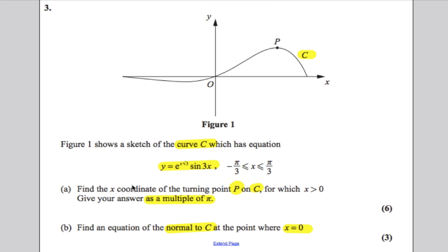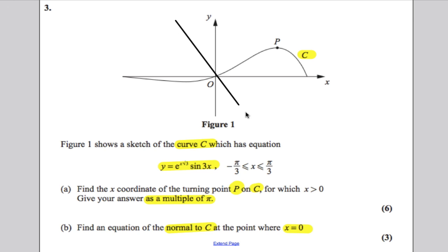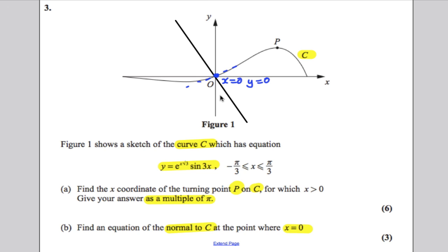Parts A and B have nothing to do with each other. Many students get stuck on part A and then leave part B out — but part B has nothing to do with part A. The normal to the curve when x is 0 would look like the line at that point. When x is 0, y is 0, and all you need to do is differentiate at that point to find the gradient of the tangent, then use the negative reciprocal to find the gradient of the normal.